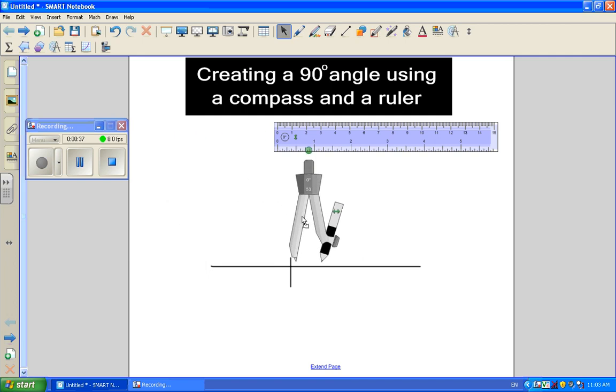All we have to do is get our compass. The compass point goes at the spot where we want our 90 degree angle to be. We're then going to move the compass to a size that we can work with. The size is irrelevant, however, we want to be able to see it so I'm going to make it fairly decent sized.